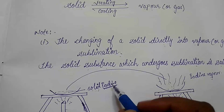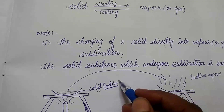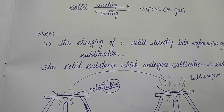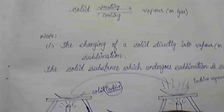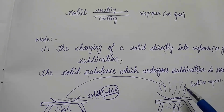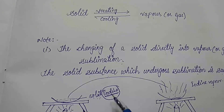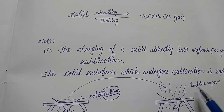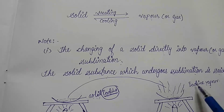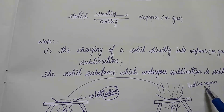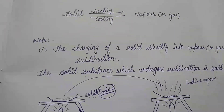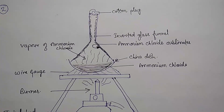So the conversion of solid into vapor without changing into liquid is called sublimation, and the substance which undergoes sublimation is called a sublime substance. So iodine is a sublime substance. We can also get solid iodine back — on cooling, iodine vapor can be converted into solid iodine.